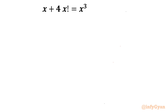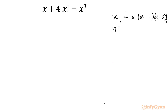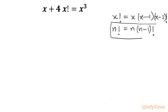Let us get started by writing what it means when factorial is present. So x factorial can be written as x times (x−1) times (x−2) factorial. The general recursive formula is: n factorial equals n times (n−1) factorial. This is the recursive general formula we will use.